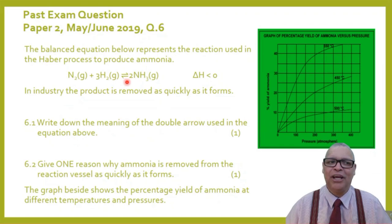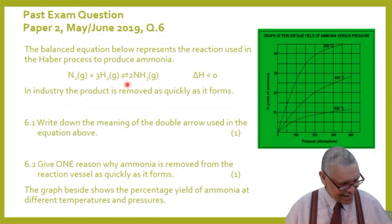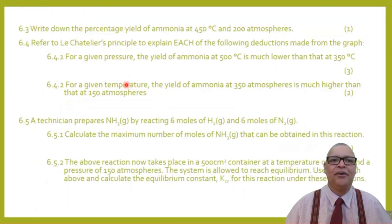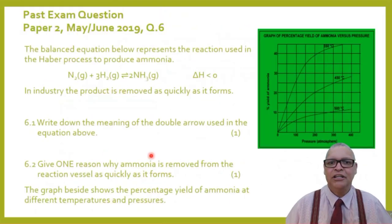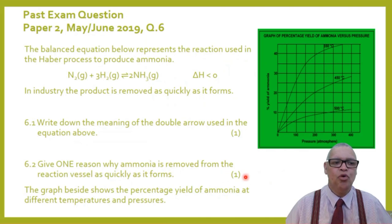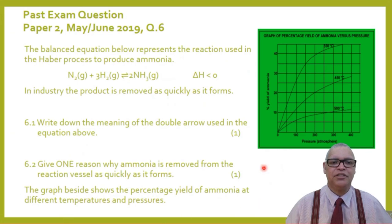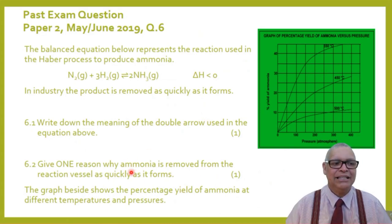Question 6.1: write down the meaning of the double arrow in the equation. Question 6.2: give one reason why ammonia is removed from the reaction vessel as quickly as it forms. There is also a graph showing the percentage yield of ammonia at different temperatures and pressures. Take a moment to attempt questions 6.1 and 6.2.